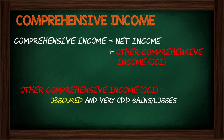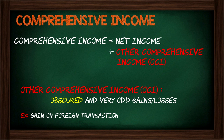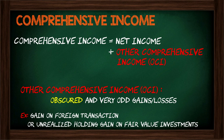In our non-operating expense section we sometimes see a loss on the sale of an asset, and in our non-operating revenue section we sometimes see a gain on the sale of an asset. We've seen these before, but those aren't the types of things that go into other comprehensive income. OCI is super obscure — we're talking things like gains on the sale of foreign transactions, unrealized holding gains on fair value investments, and gains on pension plans. Very odd gains and losses.